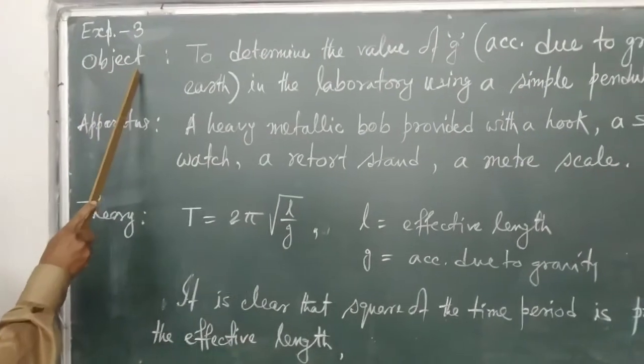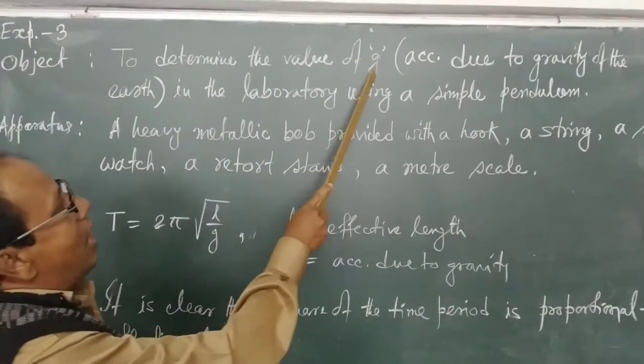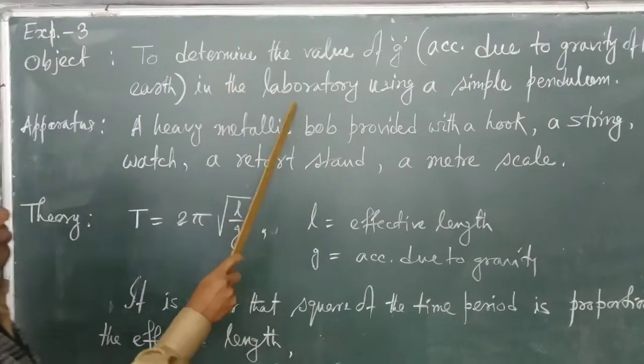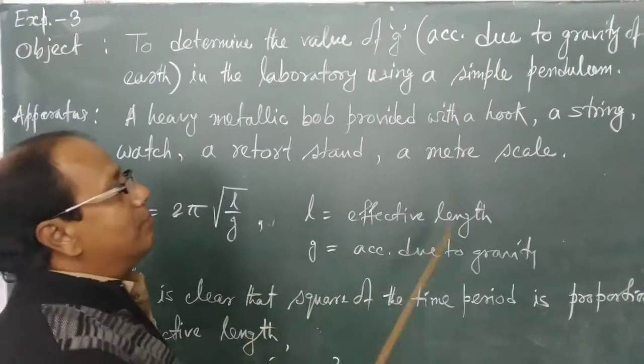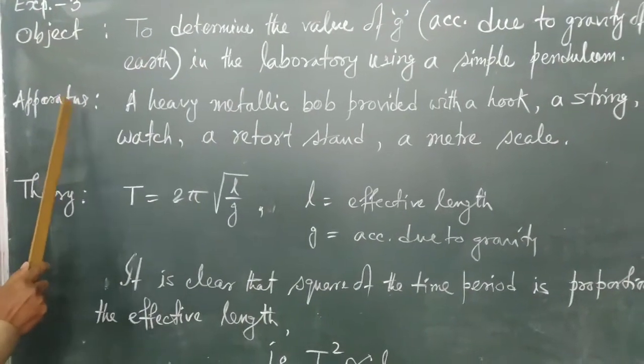Here the object or aim is to determine the value of G, means acceleration due to gravity of the earth in the laboratory itself using a simple pendulum. Now for this experiment we need apparatus.